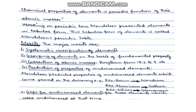Mendeleev isi talaw par kaam kiya. Uske saathi use 'encyclopedia of chemistry' bhi kehte the, itna usse chemistry ka knowledge tha. Isi law pe kaam karte hue usne ek tabular form of elements banayi, jiska naam Mendeleev's Periodic Table rakha gaya, jisme 12 periods the aur 8 groups the. Hamaari book mein iski picture nahi hai.